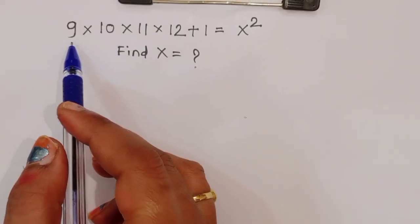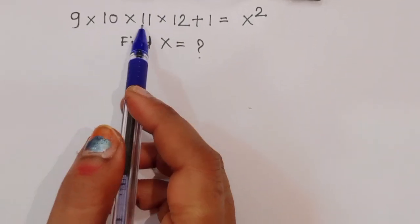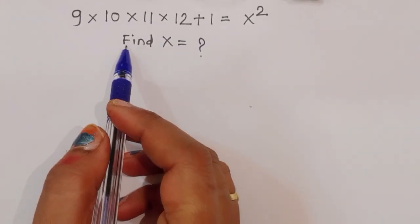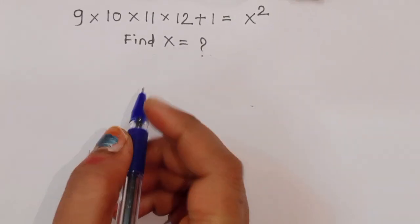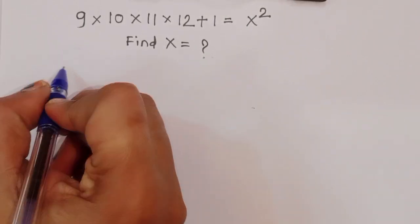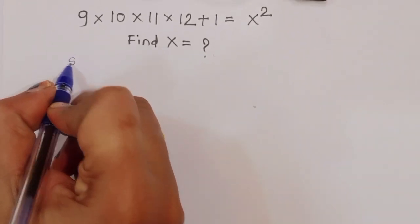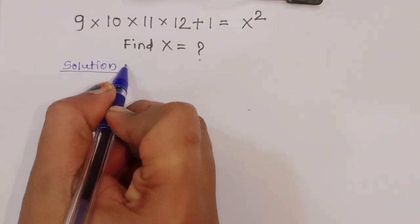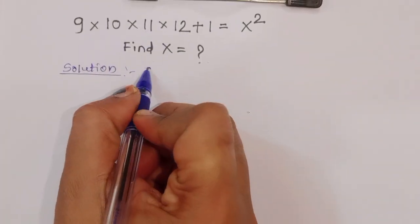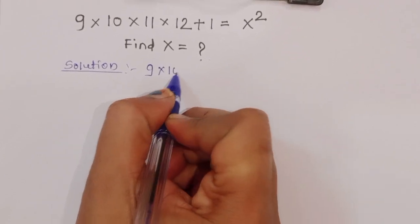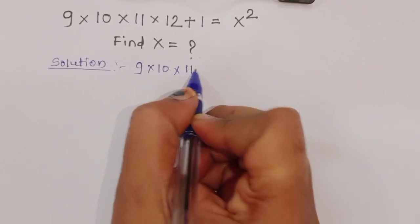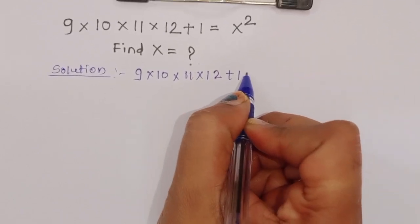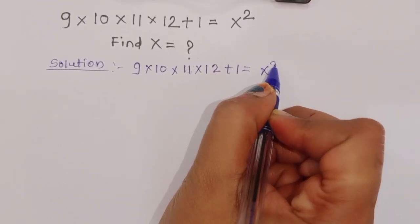The question given is: 9 times 10 times 11 times 12 plus 1 is equal to x squared. We have to find out the value of x. Let's see the solution.